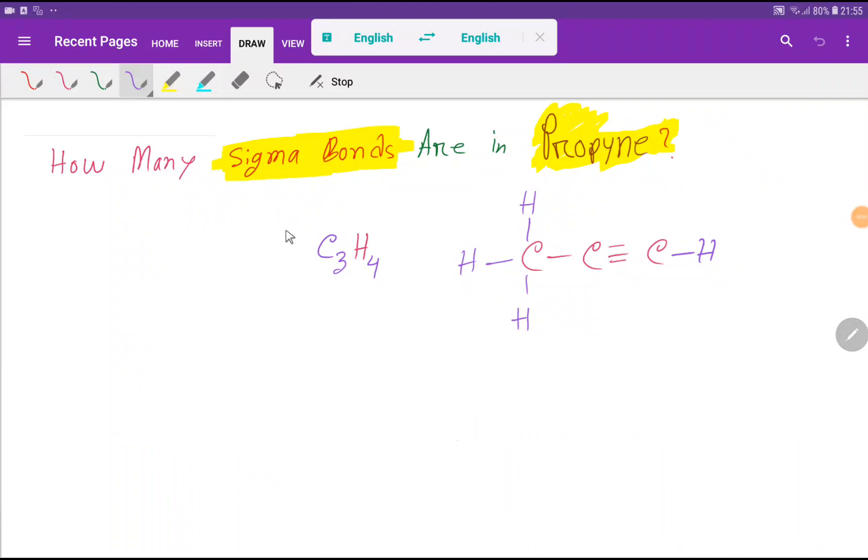Ladies and gentlemen, welcome to Chemistry Tutorial 360. Today we're going to learn the answer to the question: how many sigma bonds are in propane? This is the molecular formula of propane, and this is the structural formula of propane.